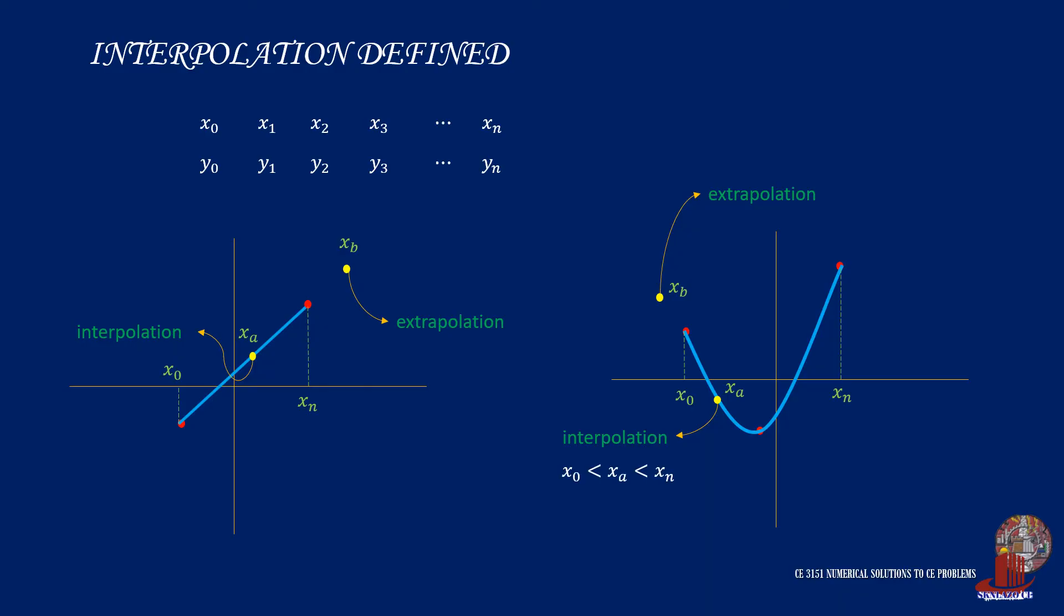Mathematically, interpolation for xa is true if xa is between x0 and xn. On the other hand, extrapolation takes place when xb is less than x0 or if it is more than xn.